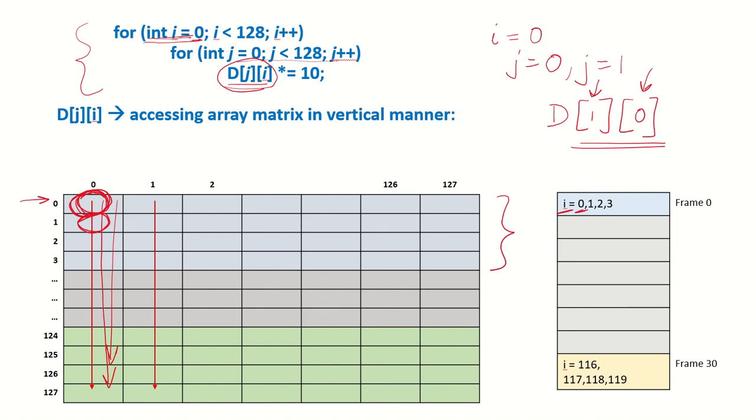Then when we are talking about [1,0], then we are talking about this particular row and this particular element. Then again there is going to be no page fault. Then this element [0,1], because this whole frame has been brought so all of these rows are present, then it is not going to be a page fault.